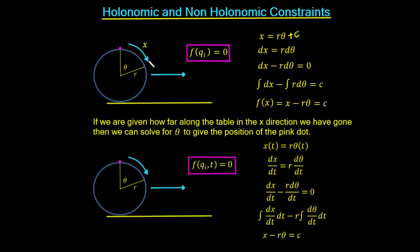The key point from this example is that we can tell the position of the pink dot if we know the distance along the x axis. If we know x and r, we can find θ from x = r·θ, and knowing θ tells us the position of the pink dot. So there is one degree of freedom — x — and only one parameter needed to define the position of the dot, which is x itself.